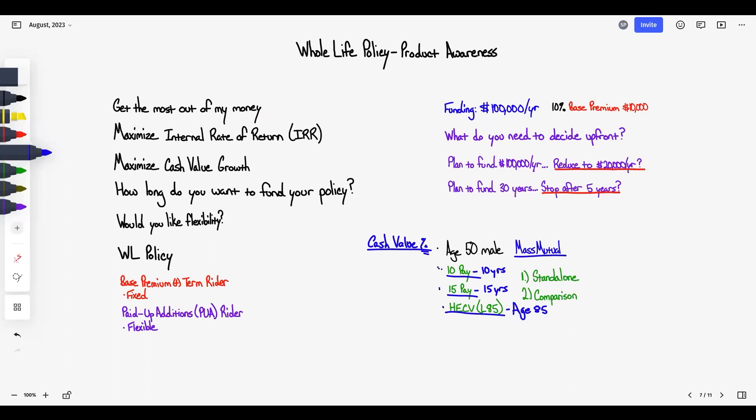The 10 pay among MassMutual products will be number one. The 15 pay will be number two. The high early cash value will often range between three and five. A lot of times it's number three, but it does range here.